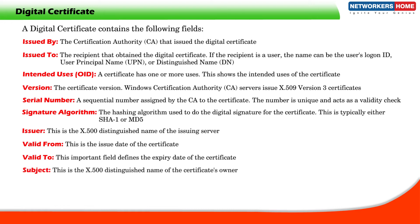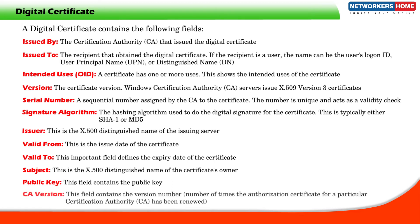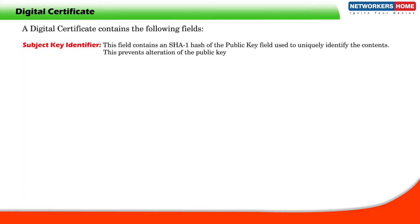Subject: This is the X.500 distinguished name of the certificate's owner. Public key: This field contains the public key. CA version: This field contains the version number — the number of times the authorization certificate for a particular certification authority has been renewed. Subject key identifier: This field contains an SHA-1 hash of the public key field used to uniquely identify the contents. This prevents alteration of the public key.